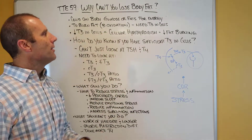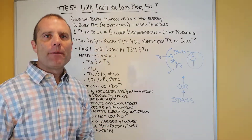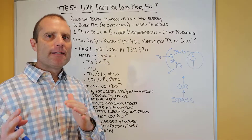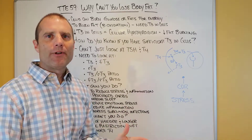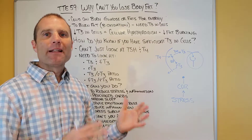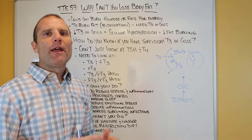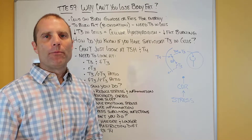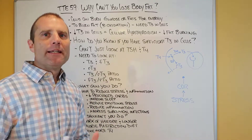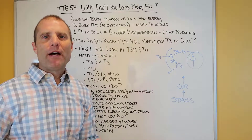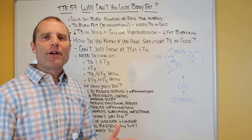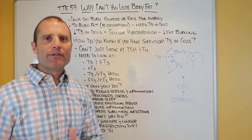So if you have decreased T3 in the cells, I call that cellular hypothyroidism — I've shot a bunch of videos on that. We differentiate cellular hypothyroidism from glandular hypothyroidism. In glandular hypothyroidism, the gland just can't make enough thyroid hormone. In cellular hypothyroidism, the gland may be fine — it may be able to produce plenty of thyroid hormone.